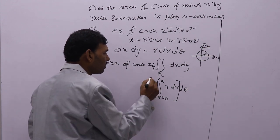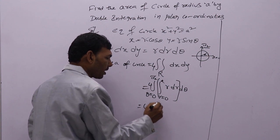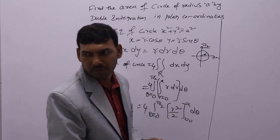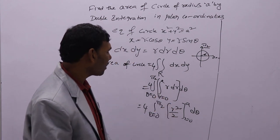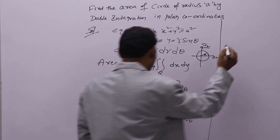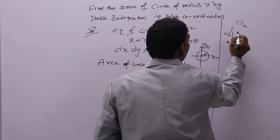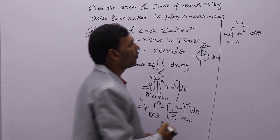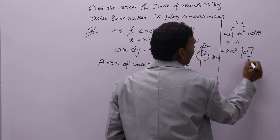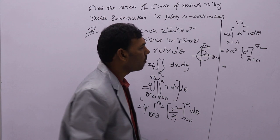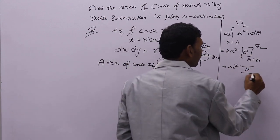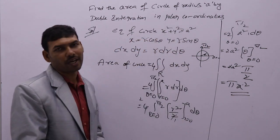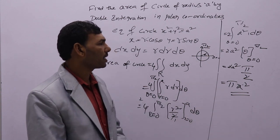So area equals 4 times integral from theta equal to 0 to pi by 2, integral from r equal to 0 to a of r dr d theta. Integrating r with respect to r gives r squared by 2. Substituting r equal to a, we get a squared by 2. Since a squared is constant, this becomes 4 times (a squared by 2) times integral from 0 to pi by 2 of d theta, which equals 2a squared times [theta] from 0 to pi by 2. Substituting: 2a squared times pi by 2, the 2s cancel, giving pi a squared.